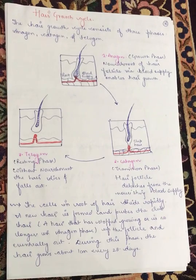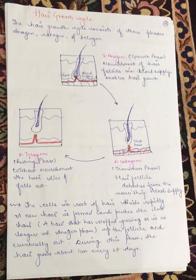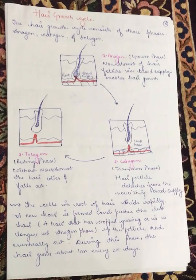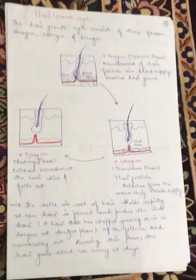During the anagen phase, hair grows about one centimeter every 28 days. This is the hair growth cycle — three stages: growth (anagen), transition (catagen), and resting (telogen), during which the hair is dead and ultimately falls off.